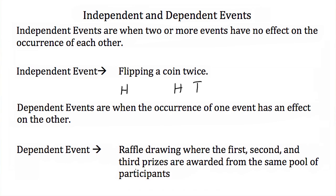If 500 people entered a raffle and third prize was picked first, everybody has a 1 in 500 chance of winning the third prize. Once the third prize is awarded, that person's raffle ticket is removed from the drawing.